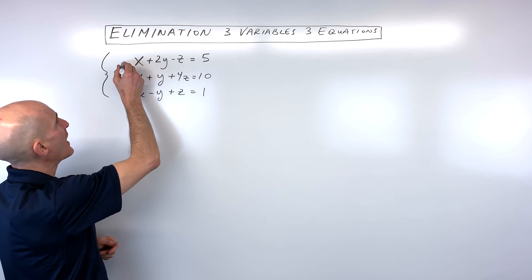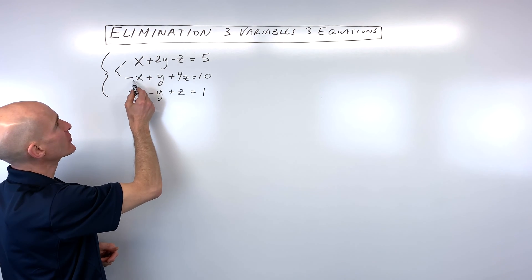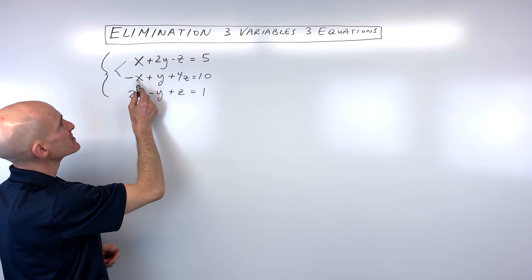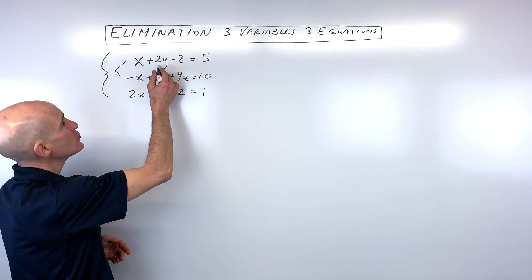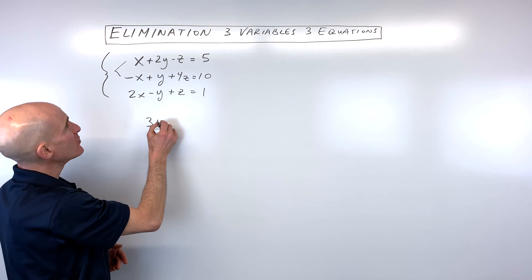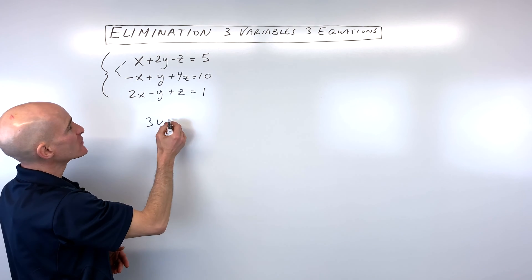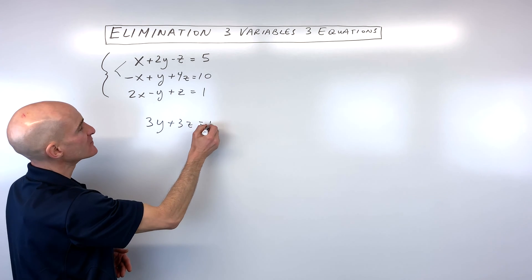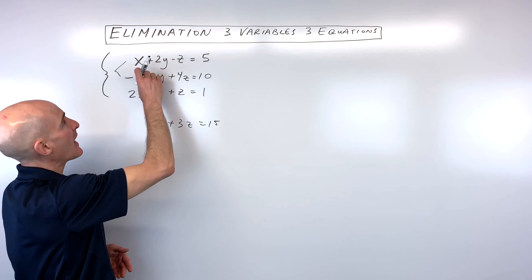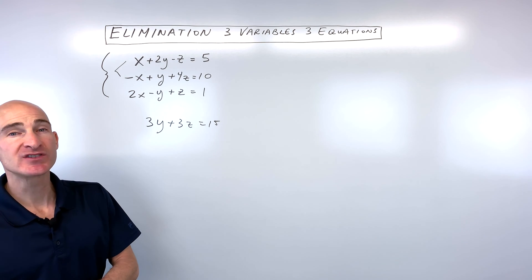So you can see here, if we add the first and second equation together, we get x plus negative x is zero, so those cancel one another out. So 2y plus 1y is 3y, negative z plus 4z is positive 3z, and 5 plus 10 is 15. So all we did was add the two equations together, the first and second equation.